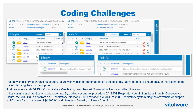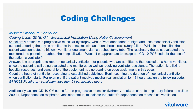A patient with a history of chronic respiratory failure with ventilation dependence on tracheostomy was admitted for pneumonia and was using their own ventilation equipment in the hospital. The facility did not report the ventilation procedure code because it was uncommon for them. By adding that code, reimbursement increased by approximately $4,500 and severity of illness improved. A coding clinic reference confirms that it can be reported regardless of who owns the equipment, since resources are being utilized during the inpatient stay.